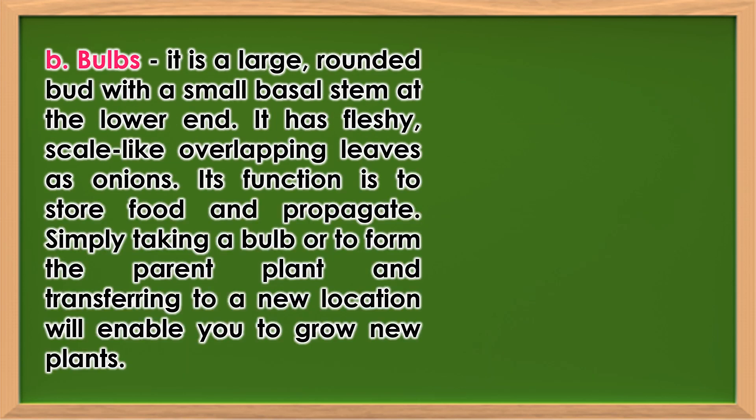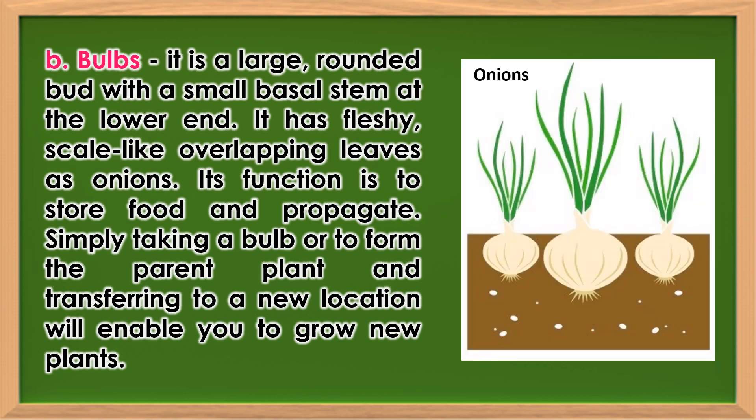Bulbs: A bulb is a large, rounded bud with a small basal stem at the lower end. It has fleshy, scale-like overlapping leaves, as in onions. Its function is to store food and propagate. Simply taking a bulb from the parent plant and transferring it to a new location will enable you to grow new plants.